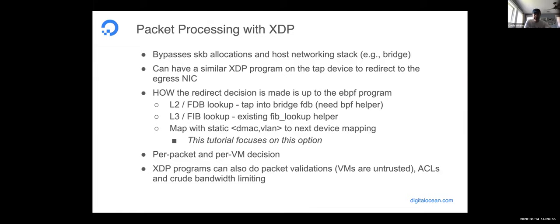Packet processing with XDP: XDP essentially bypasses all the networking stack. The idea is you're running a program in the driver for that NIC. The program can do something like a redirect to send the packet straight to a tap device, so the virtual machine is going to receive that packet. How that redirect decision is made is really up to the eBPF program or the system architect doing the networking for that node. One thing you could do is have an FDB — tap into the bridge FDB and have it say, this MAC address and this VLAN goes to this next device and have a redirect.